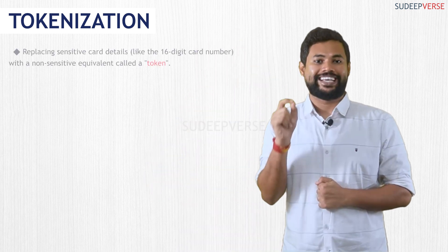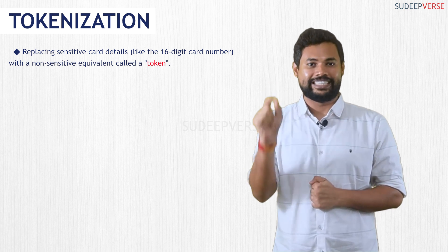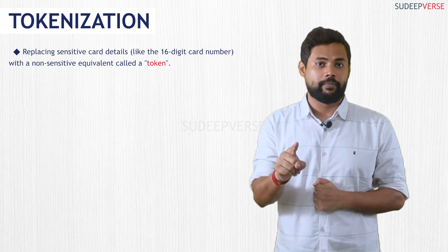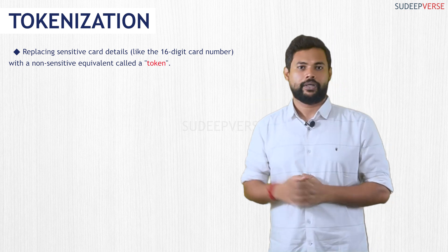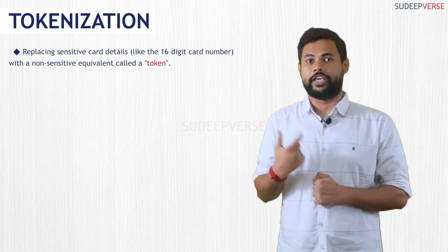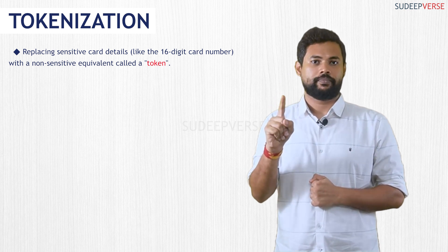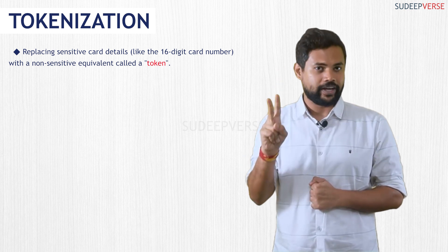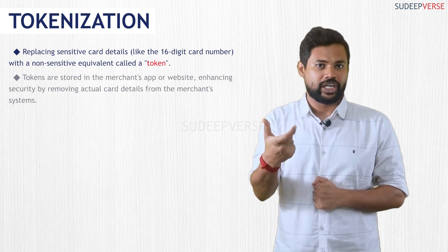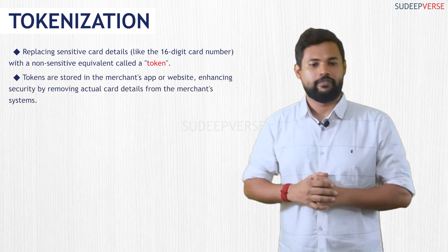Basically, tokenization is replacing the 16-digit card number with an alternative number or a token. This token is generated on the combination of the token requester, the device, as well as the card. On the basis of these three, a token is generated and saved in the merchant's website.